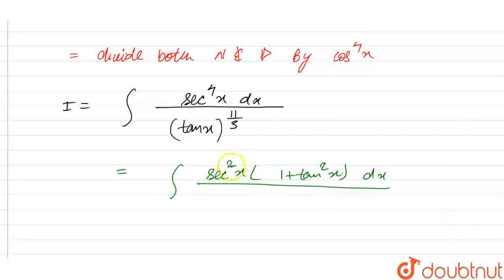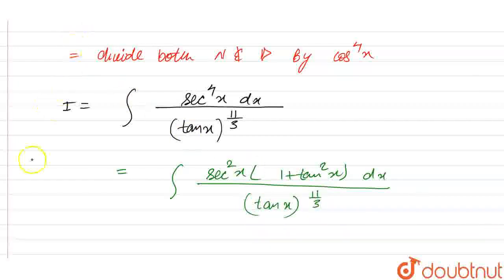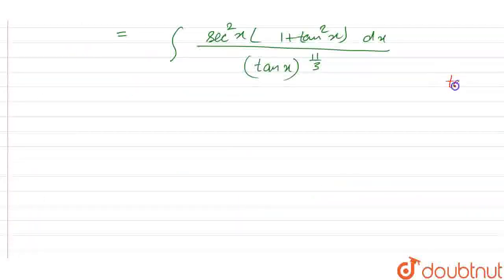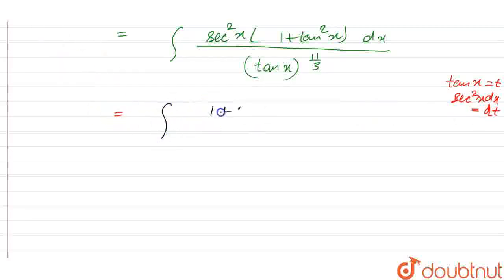We have just separated the power of 2, writing sec²(x) as 1 plus tan²(x). Now we have tan(x) to the power 11/3 in the denominator. Putting tan(x) as t, so sec²(x) dx equals dt, we get (1 + t²) divided by t to the power 11/3 dt.